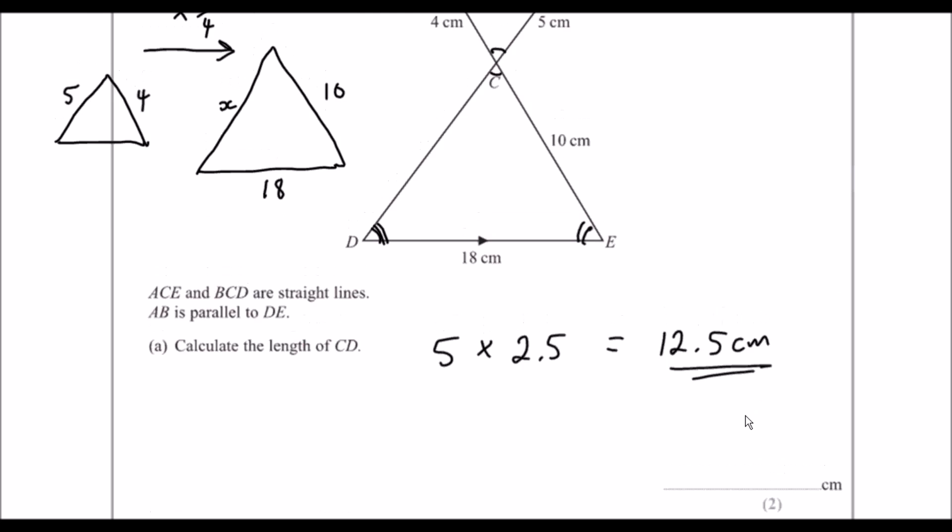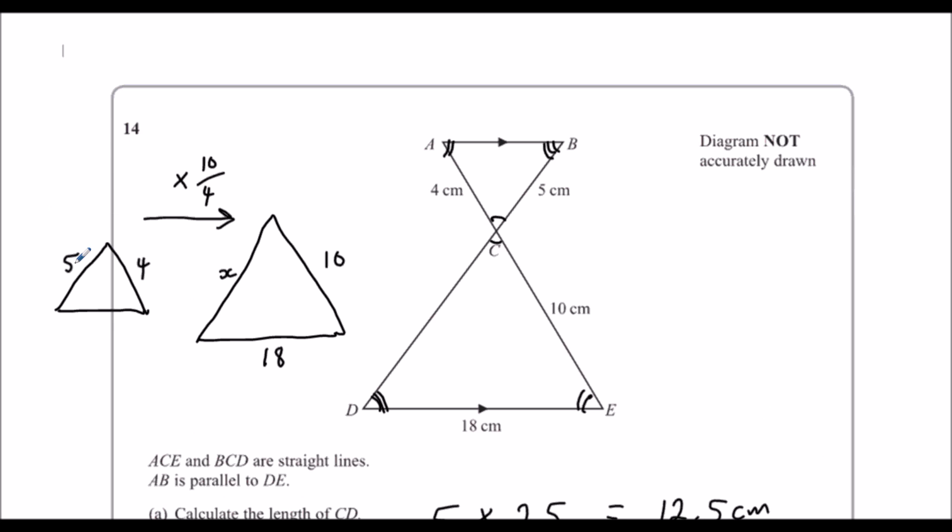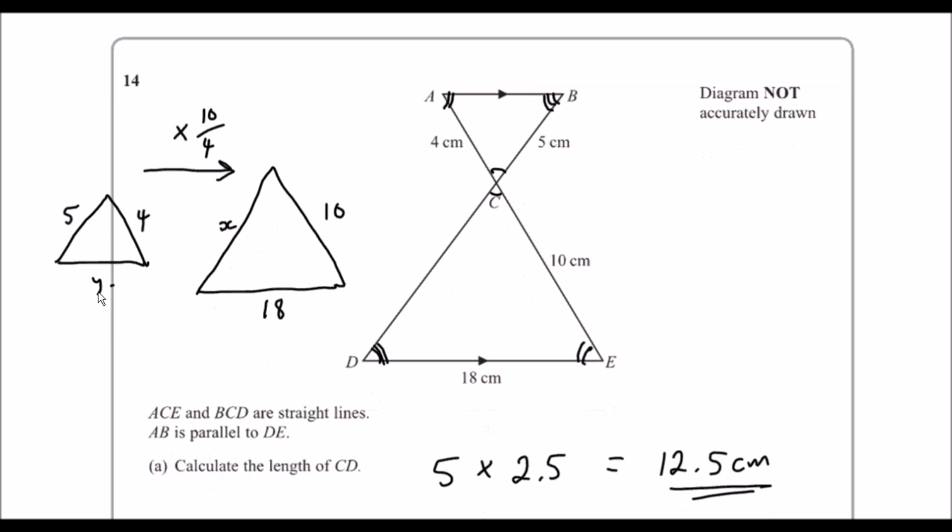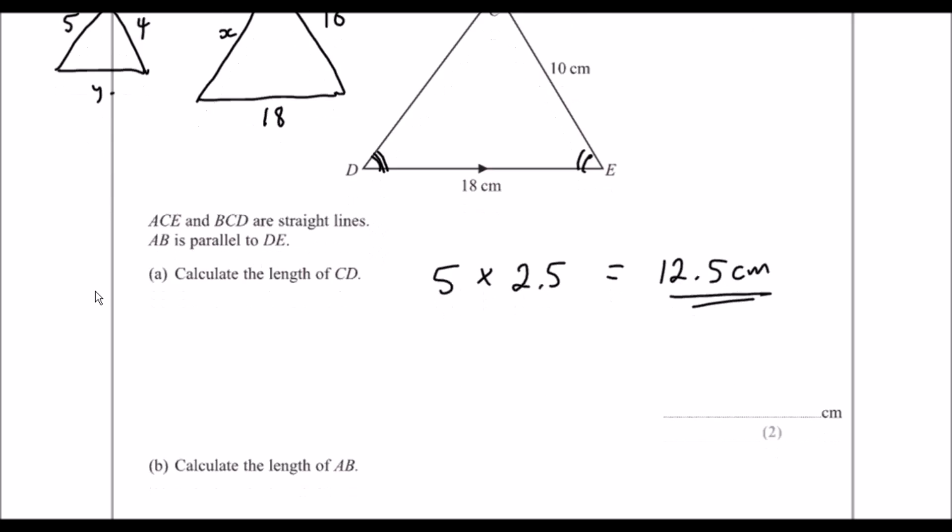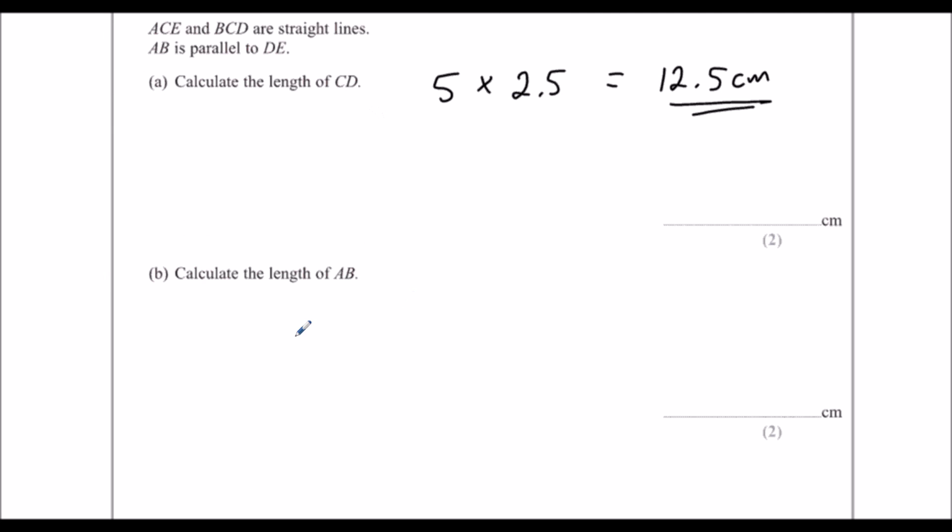Part B, calculate the length of AB. So that's this one, this is the second question. And to go backwards, we divide by the scale factor. So it's eighteen divided by two point five. And we use the calculator, and it should give us seven point two, seven point two centimeters.